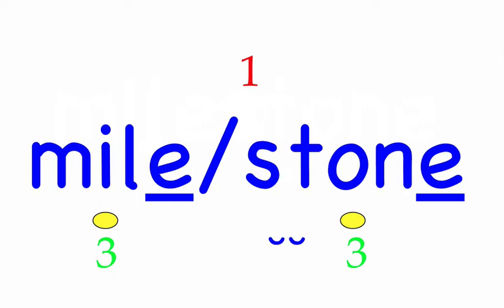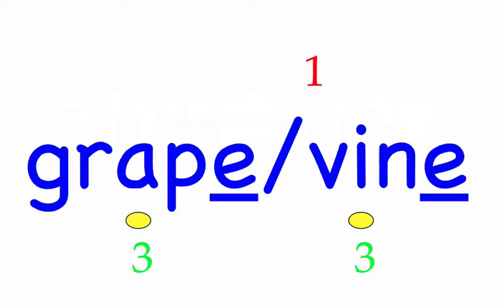Grapevine. I heard it through the grapevine. First syllable: grape, four sounds, G-R-A-P. Second syllable: vine, three sounds, V-I-N. Grapevine — mark the word.